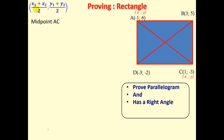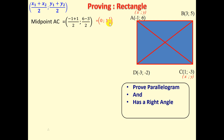We're using the midpoint formula: (x1 + x2) / 2, (y1 + y2) / 2. Using the formula, we have (-1 + 1) / 2 and (6 - 3) / 2. That gives us (-1 + 1) = 0, divided by 2 is 0. And (6 - 3) = 3 over 2, giving us 1 and a half. So the midpoint of AC is (0, 1.5).